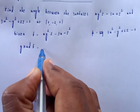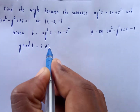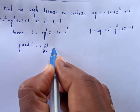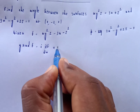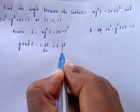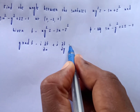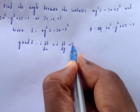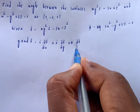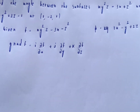The gradient operator is: i·(∂f/∂x) + j·(∂f/∂y) + k·(∂f/∂z).